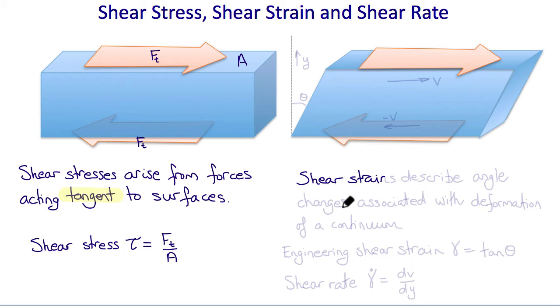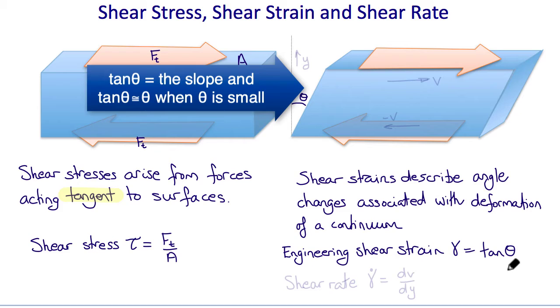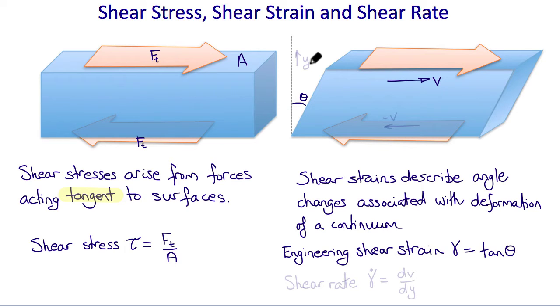Shear strains describe the angle changes associated with deformation of a continuum. These actually require length changes too. For example, if the angle change produced by these shear stress in this example was theta, then the so-called engineering shear strain gamma would be the tan of the angle theta, or theta for small angles. If instead of thinking of this situation as a deforming solid, we think of it as a flowing fluid with velocity V on top and minus V on bottom, and a gradient of velocity with respect to the Y axis, then the shear rate in this fluid flow example would be that gradient dV dy. It's the rate of shear strain.